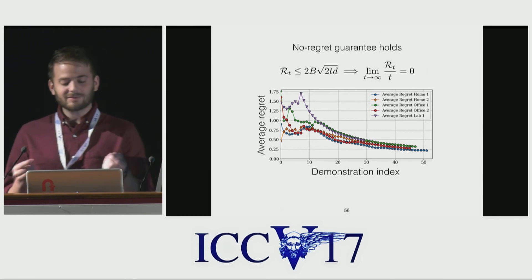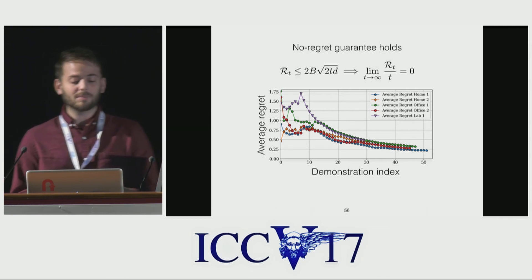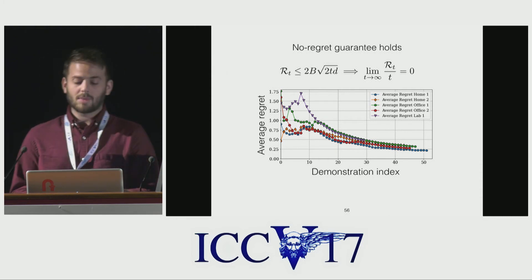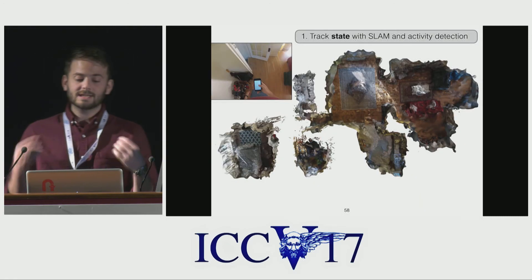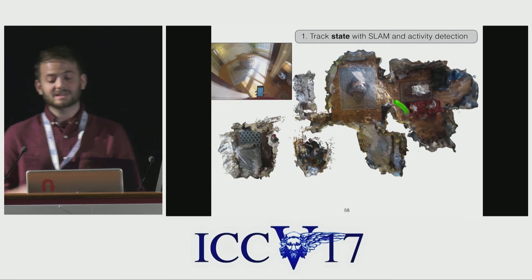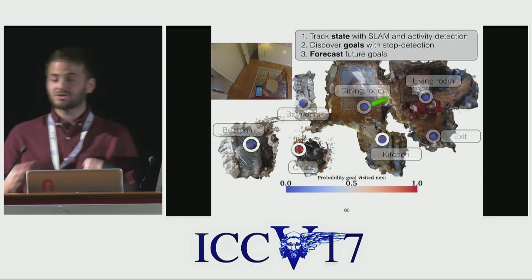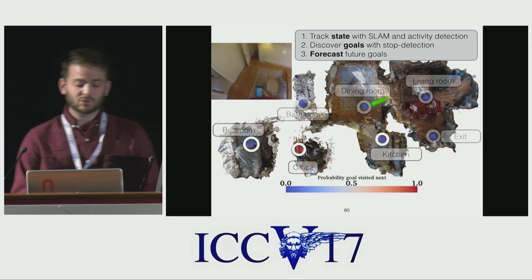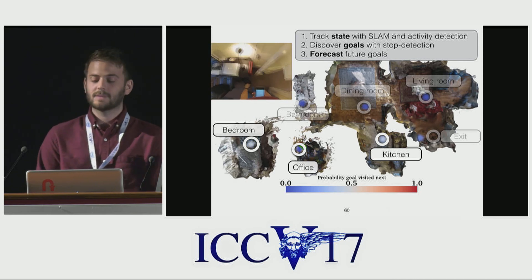In our experiments, we measured the average regret of our algorithm and our no-regret bound holds. In practice, we don't have to worry about being worse than a batch model that's seen all of the data, and our model doesn't have to see all of the data to begin forecasting. In our online IRL approach, we continuously track the state of the user with SLAM and activity detection, visualized as a green sphere. Goals are discovered with a stop detection procedure, and we continuously forecast the goals of the user with colors corresponding to their probabilities. At every goal, our model is updated; at every state, a new forecast is made.